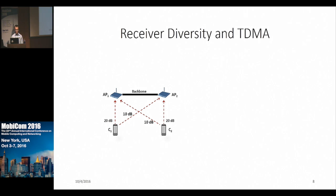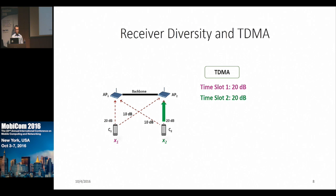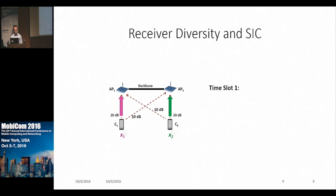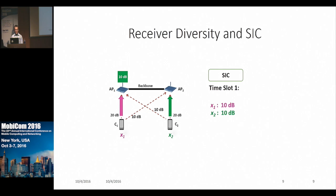To achieve that goal, we looked into receiver diversity in Wi-Fi networks. Using a small 2x2 network example: with TDMA, client 1 transmits in time slot 1 and client 2 in time slot 2, giving a capacity of 20 units per slot. If we use SIC, both clients transmit simultaneously. At AP1, we decode client 1's packet first, subtract it out, then decode client 2's packet. In this case, both clients get 10 dB of SNR, so capacity is still 20 units per slot — no gain over TDMA.